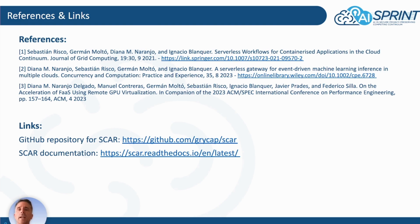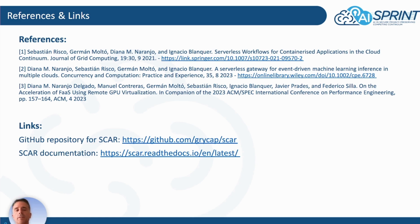There are references where you can gather more details about how these tools are used in the AI Sprint project and in other scenarios. You can check the GitHub repository and the SCARP documentation — this is an open-source development based on the Apache 2 license. Thank you very much for your attention. Bye-bye.